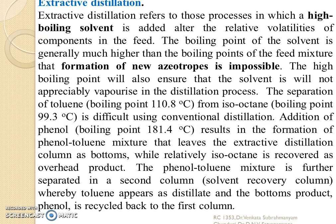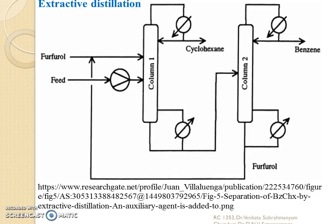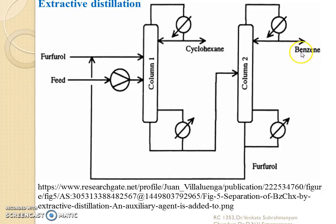For extractive distillation, one example is toluene and isooctane — we can separate this by addition of phenol. Another example of extractive distillation is the separation of cyclohexane and benzene feed. For this, we will add the peripheral. In the first column, cyclohexane, the more volatile component, is separated. The cyclohexane and the peripheral plus benzene are sent to the next column, where benzene is distilled out and the peripheral comes to the bottom, which is then recycled back.